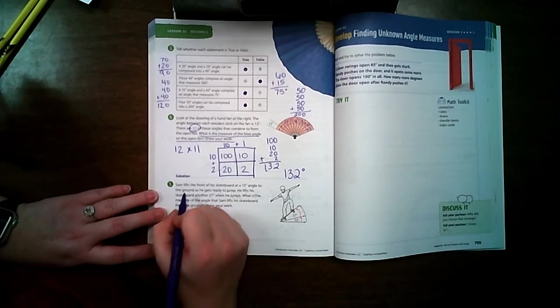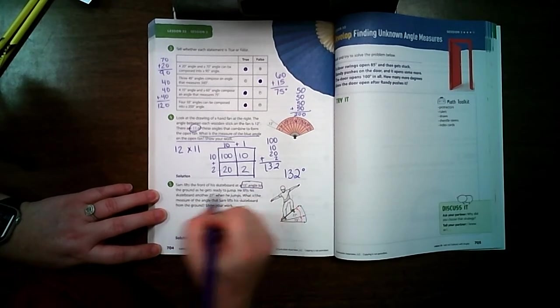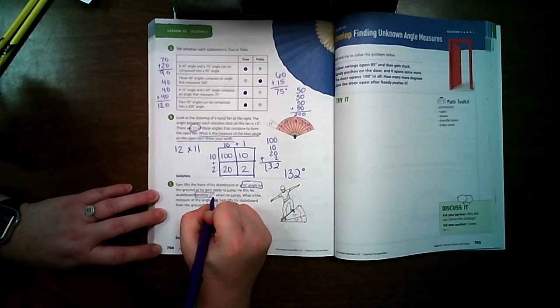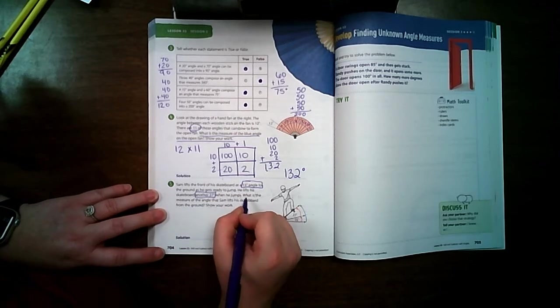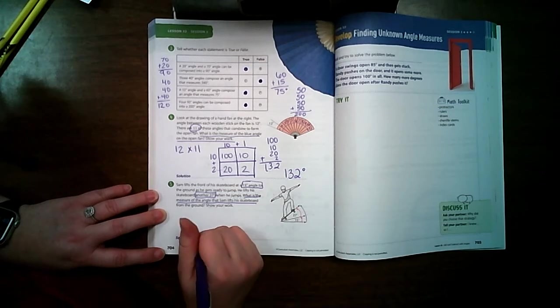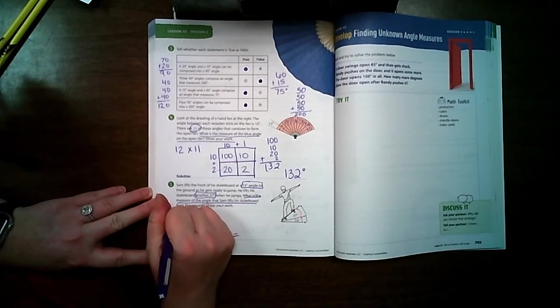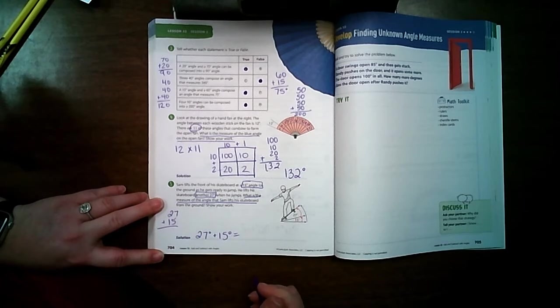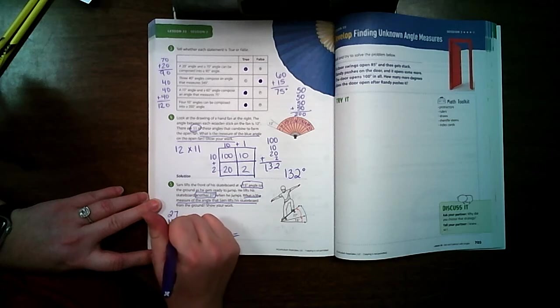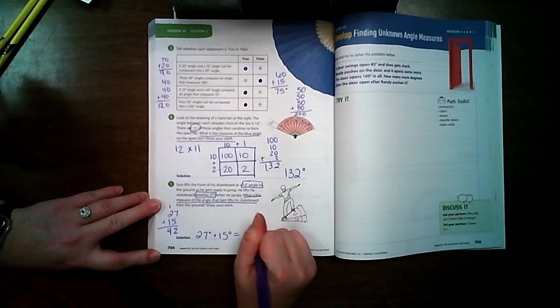Our last problem. Sam lifts the front of his skateboard at a 15 degree angle to the ground as he gets ready to jump. He lifts his skateboard another 27 degrees when he jumps. What is the measure of the angle that Sam lifts his skateboard? So over here we are going to add 27 degrees plus 15 degrees. And if you like to write it up and down, if that is easier for you, then I highly recommend doing that. So 7 plus 5 is 12. Carry my 1. 2, 3, 4. So it's 42 degrees.